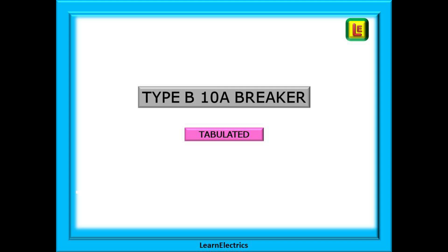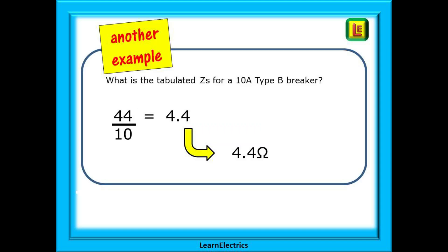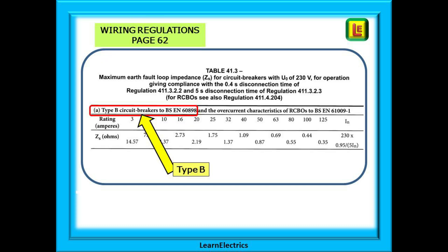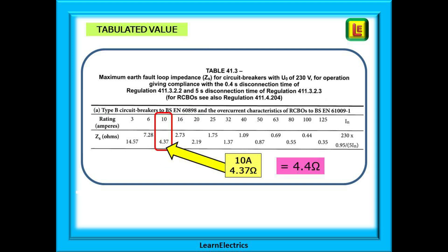Let's try another. We'll stay with type B breakers but this time the IN or rated value is 10 amps. We don't even need a calculator for this one — 44 divided by 10 is 4.4 ohms, and that's our answer: 4.4 ohms tabulated. We can check this on page 62, table 41.3, find type B breakers, find 10 amps, and below it is the answer 4.37 ohms, which is close enough to our 4.4 ohms.